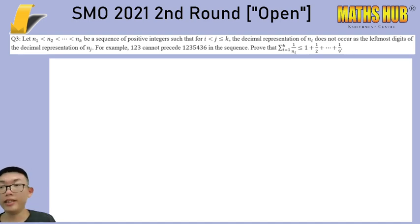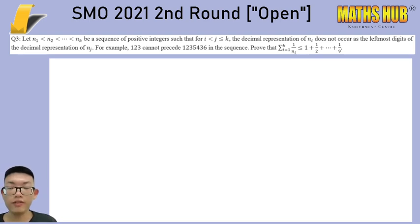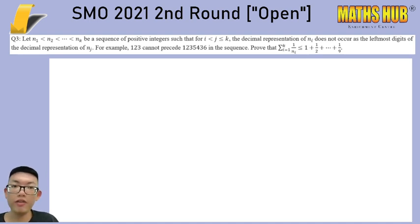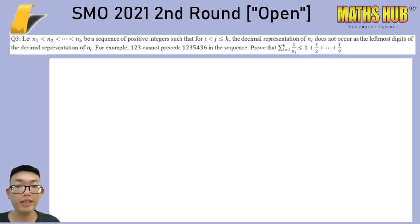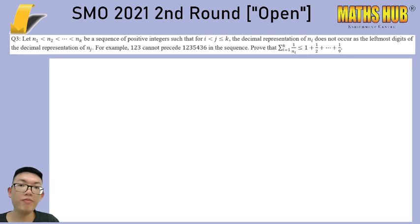So i less than j less than or equal to k, and Ni and Nj just means that if you have a sequence of numbers, the earlier number cannot appear as the front part of a later number. So prove that if you add up all the reciprocals of numbers in your sequence, the upper bound is 1 plus 1/2 plus 1/3 plus 1/4 all the way until 1/9.